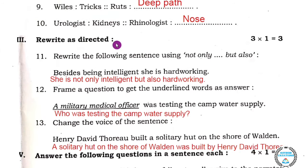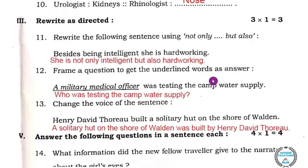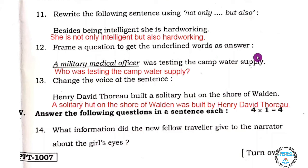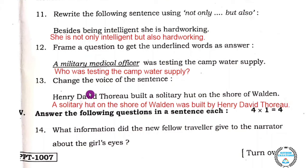Main number three: rewrite as directed. There are three questions and each question carries one mark, so three marks total. Question eleven: rewrite using 'not only but also' — 'Besides being intelligent, she is hardworking' becomes 'She is not only intelligent but also hardworking.' Question twelve: frame a question for the underlined words — 'A military medical officer was testing the camp water supply' — answer: 'Who was testing the camp water supply?' Question thirteen: change the voice — 'Henry David Thoreau built a solitary hut on the shore of Walden' becomes 'A solitary hut on the shore of Walden was built by Henry David Thoreau.'